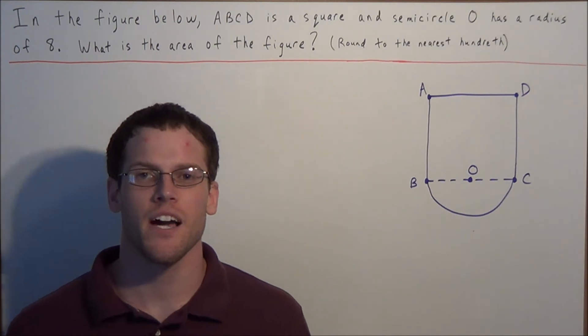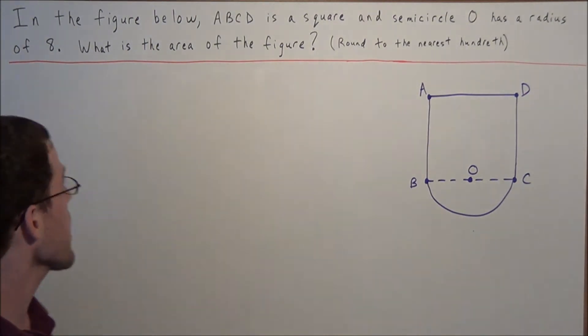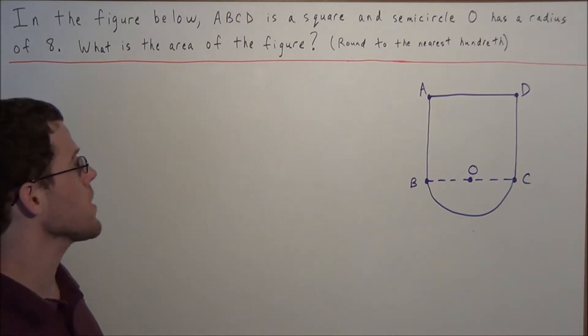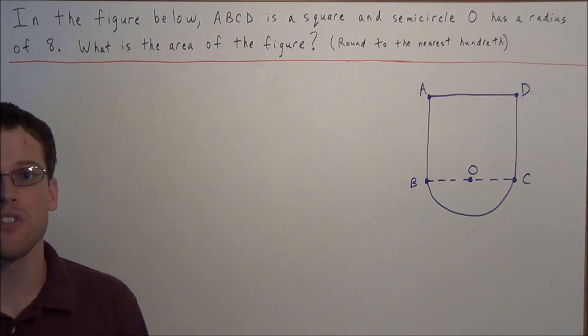Hi, my name is Vincent and today I want to take a look at finding the area of irregular shapes. We have the problem: in the figure below ABCD is a square and semicircle O has a radius of 8. What is the area of the figure? And we need to round our answer to the nearest hundredth.